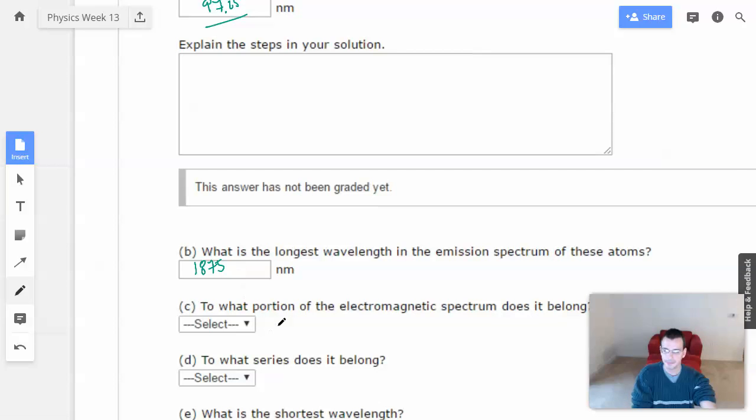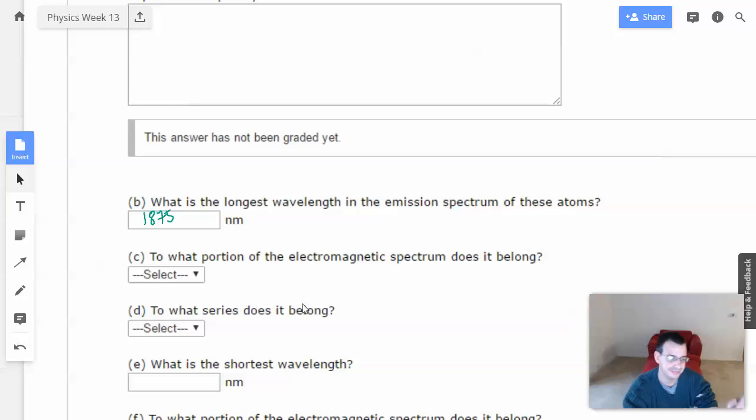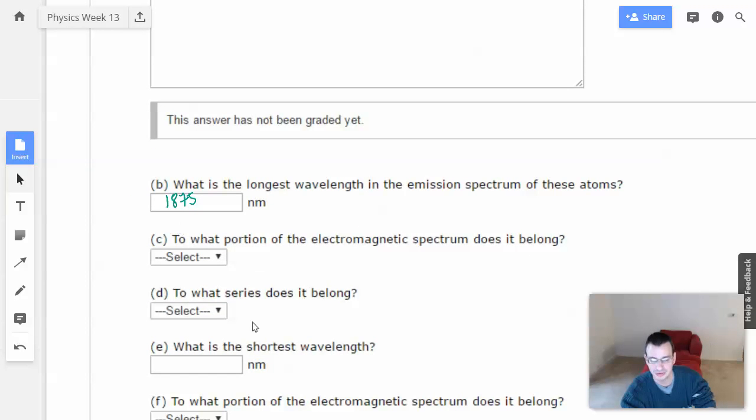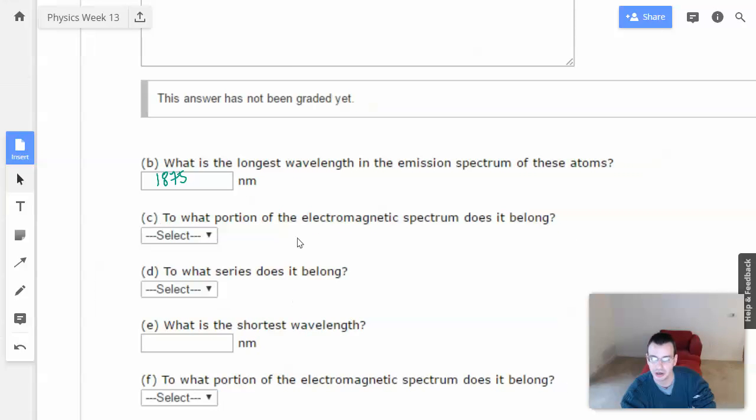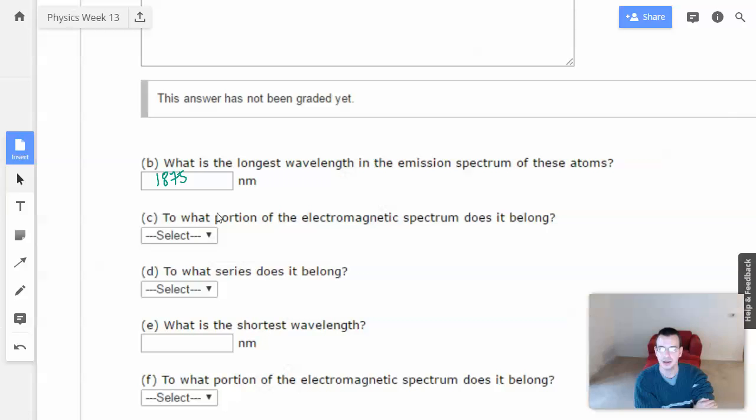To what portion of the electromagnetic spectrum does this belong? I'll let you guys do that one. Look it up on Google. Google 1875 nanometer spectrum. To what series does it belong? Okay. So for this guy again, this is going to be a Paschen series. So Paschen.